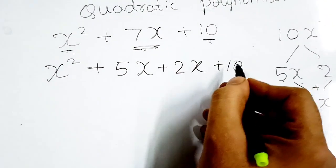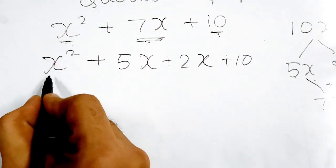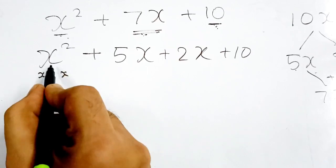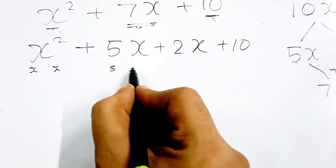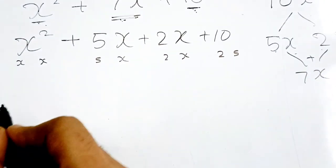Now this is an important step. We have to take the common. See here, x² is x times x. 5 into x means 5x is there. 2 into x means 2x. 10 we can write as 2 times 5.